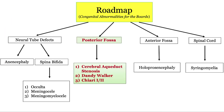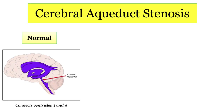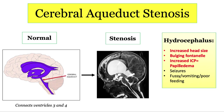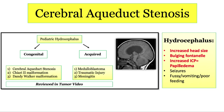Let's move to the posterior fossa. We'll start with cerebral aqueduct stenosis. Remember that the cerebral aqueduct connects the third and fourth ventricles, so a stenosis or blockage of the fluid's passageway will cause an obstructive hydrocephalus. Signs and symptoms of hydrocephalus in children include increased head size with a bulging fontanelle, seizures, increased intracranial pressure with accompanying papilledema, and non-specific findings like vomiting, fussiness, or poor feeding. Note that aqueduct stenosis is only one cause of hydrocephalus.